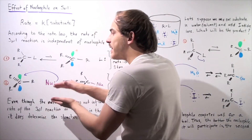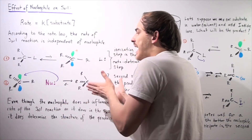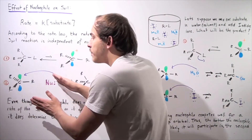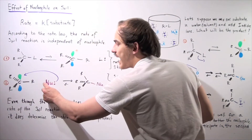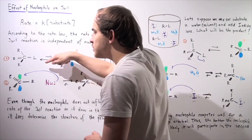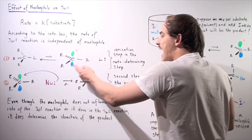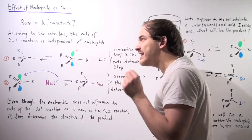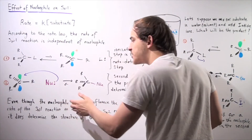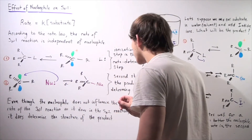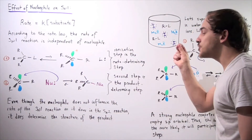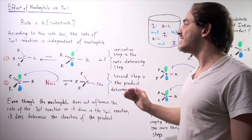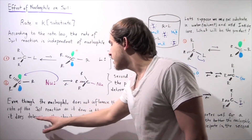The second step is the step that involves our nucleophile. To determine how the nucleophile affects our SN1 reaction, we look at this step: the positively charged carbocation is captured by our nucleophile. The lone pair of electrons attacks the empty 2p orbital on the carbocation, forming our final product. So our nucleophile, even though it does not influence the rate of the reaction, does influence the final structure of our product. The second step is the product-determining step.